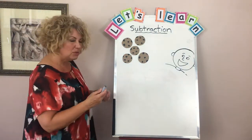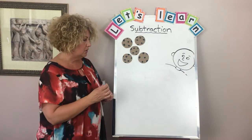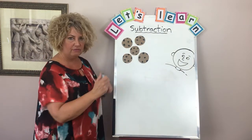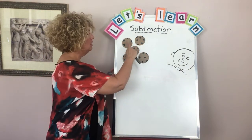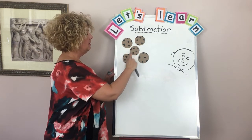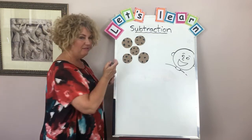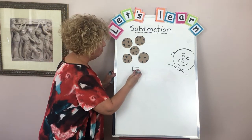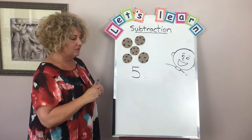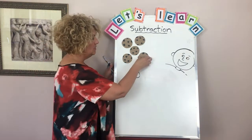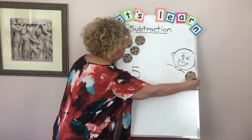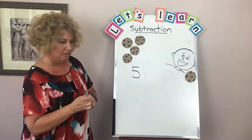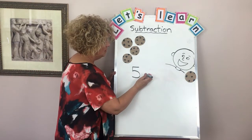All right, so this is what subtraction looks like. We're going to start with how many cookies we have. Can you help me count these? One, two, three, four, five. We have five cookies to start with, so I'm going to write a number five. And then Mr. Visconti is going to steal one of those cookies. There you go, Mr. Visconti — he's so happy about it!